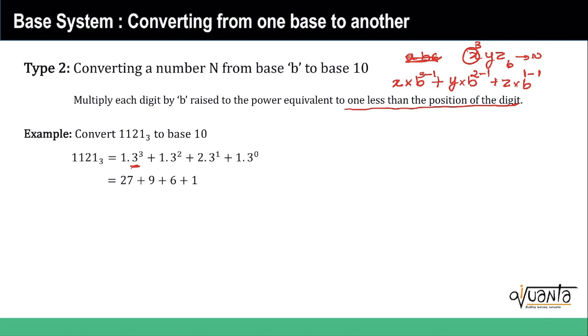9 plus 2 into 3, 6 plus 1, and you add them together. You get 43, which means we have done the previous one also correctly. So you can move from any base to any base by doing this.